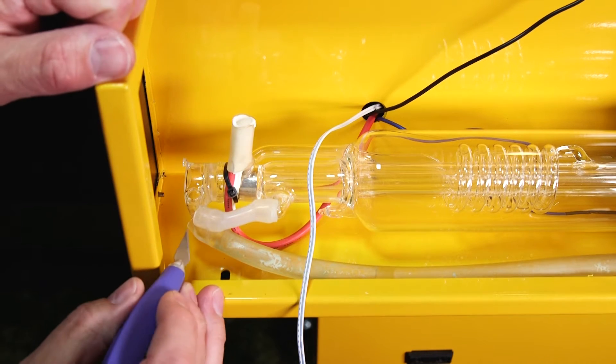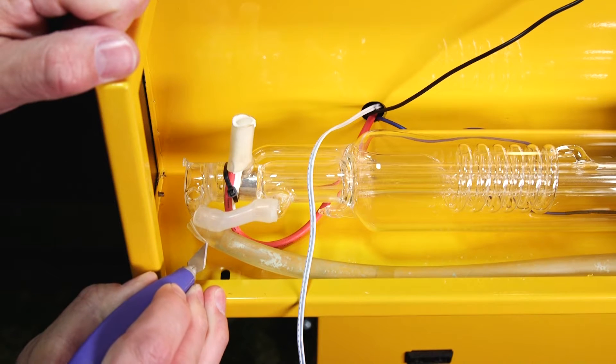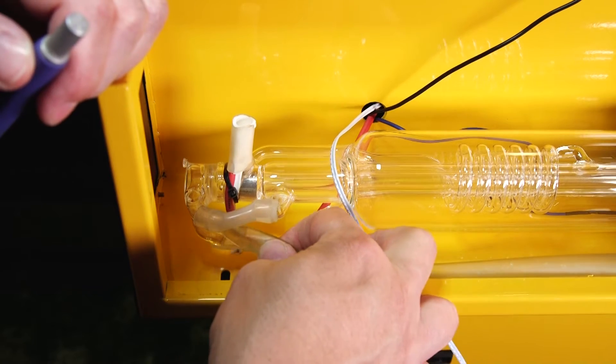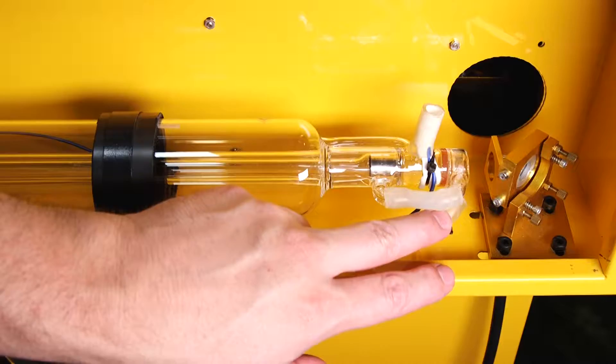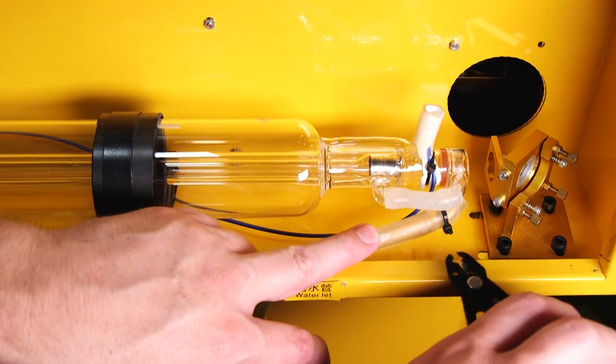So I'm just going to take an exacto knife, run it down the side of the tubing like so, being careful not to damage the glass under it. After I've cut the silicone tubing it simply pulls off just like that. I'm going to remove the tubing on the right hand side of my bulb in a similar method.